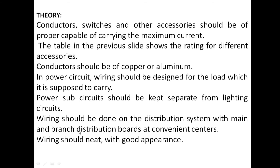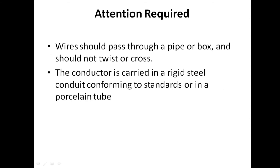Wiring should be done with the main and branch distribution board at convenient centers, and wiring should be neat with good appearance. Attention required while doing house wiring: wire should pass through the pipe or box and should not twist or cross, because twisting may damage insulation and expose the conductor, creating a risk of short circuit. Conductors are carried in rigid steel conduit conforming to standards, or in a porcelain — that is, PVC — tube.